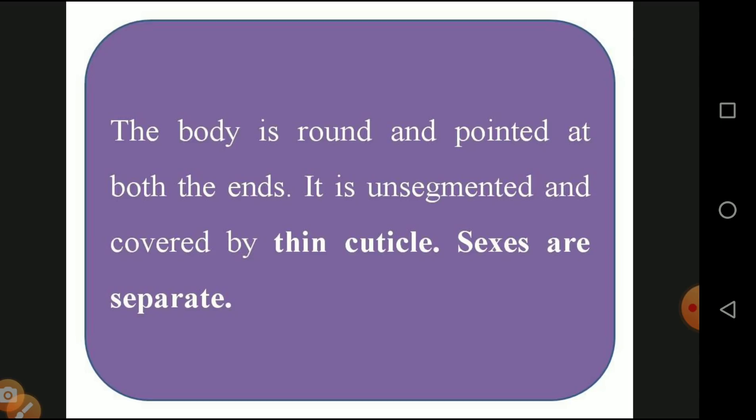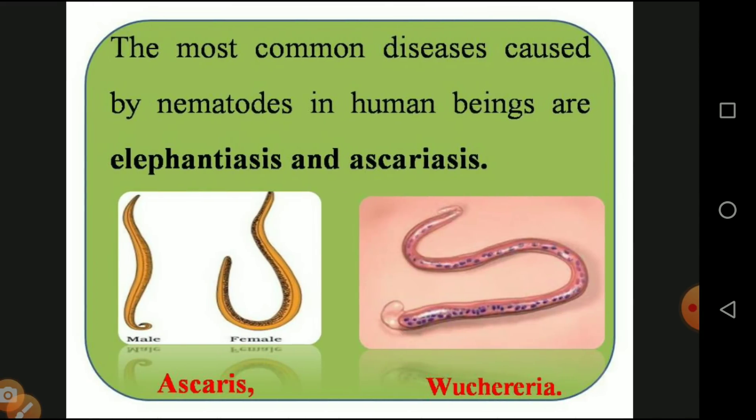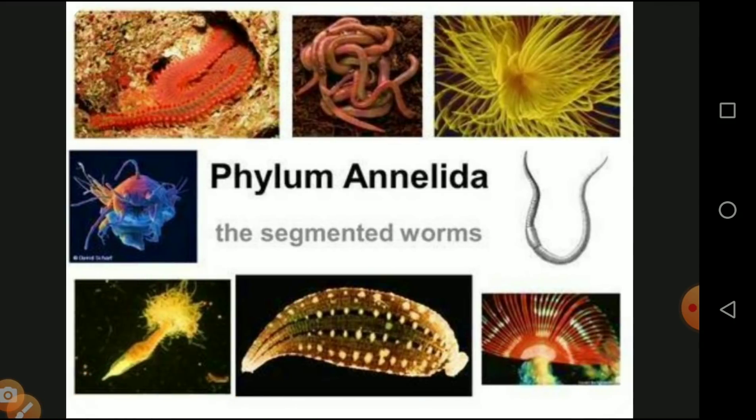They are unsegmented and covered with a thin cuticle — there is no segmentation, and the cuticle is a mucous membrane that prevents the organism from losing moisture. The sexes are separated — male organisms are separate from female organisms. The most common diseases caused by nematodes in humans are elephantiasis and ascariasis, caused by organisms such as Ascaris lumbricoides and Wuchereria bancrofti.